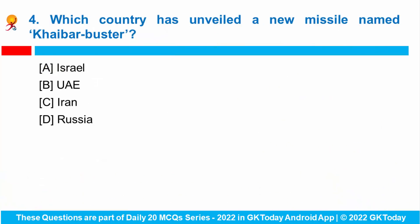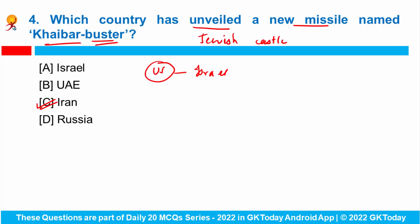Question number four: which country has unveiled a new missile named Khyber Buster? Iran recently unveiled a new missile capable of hitting nearby US bases in the region and targets within Israel. The Khyber Buster is a reference to a Jewish castle overrun by Muslim warriors led by Prophet Muhammad (SAW). It has a range of 900 miles and runs on solid fuel. Iran has the largest arsenal of missiles in the Middle East.